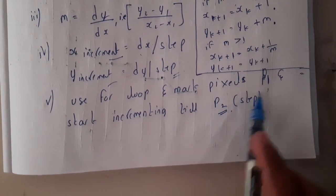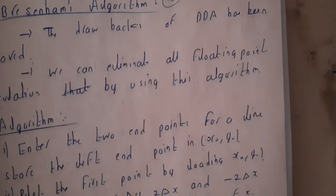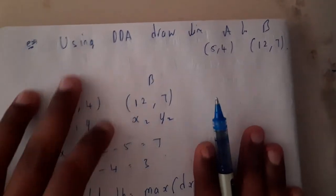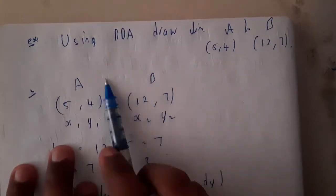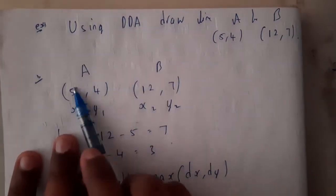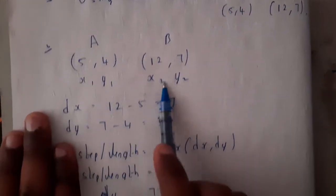You will be marking the pixels from P1 to P2 and you'll be starting calculating and you'll be finding the points. So this is a small example which we'll be discussing right now. Using DDA draw the line A to B. The point A and point B, so he gave x1, y1, x2, y2.